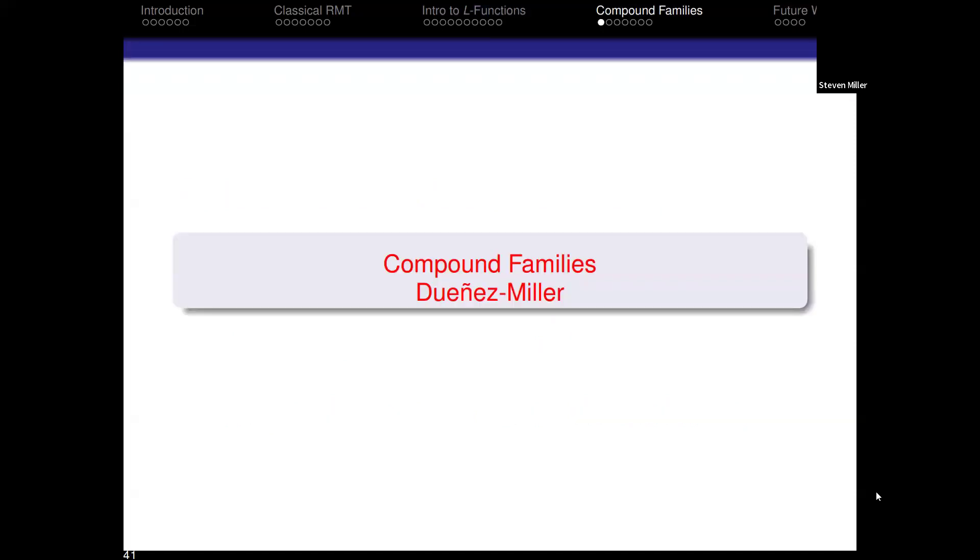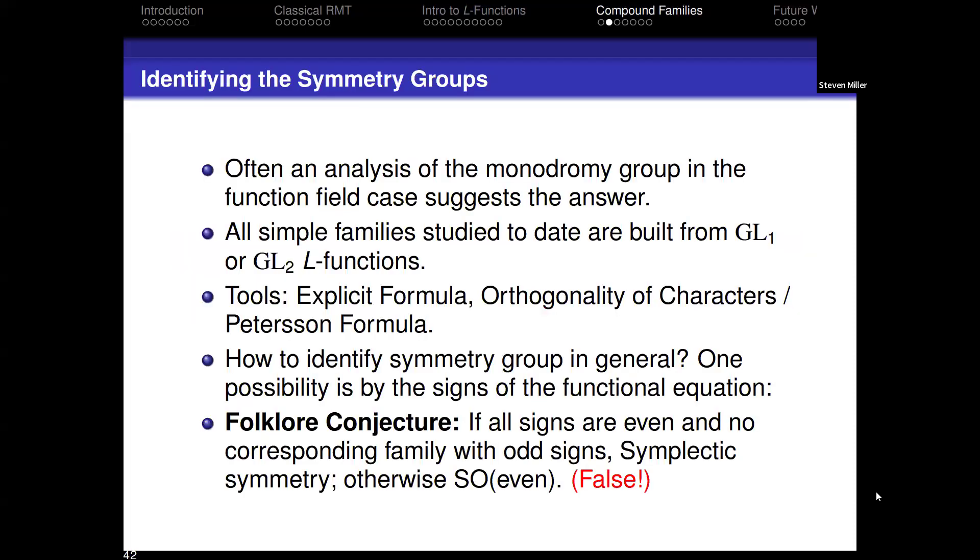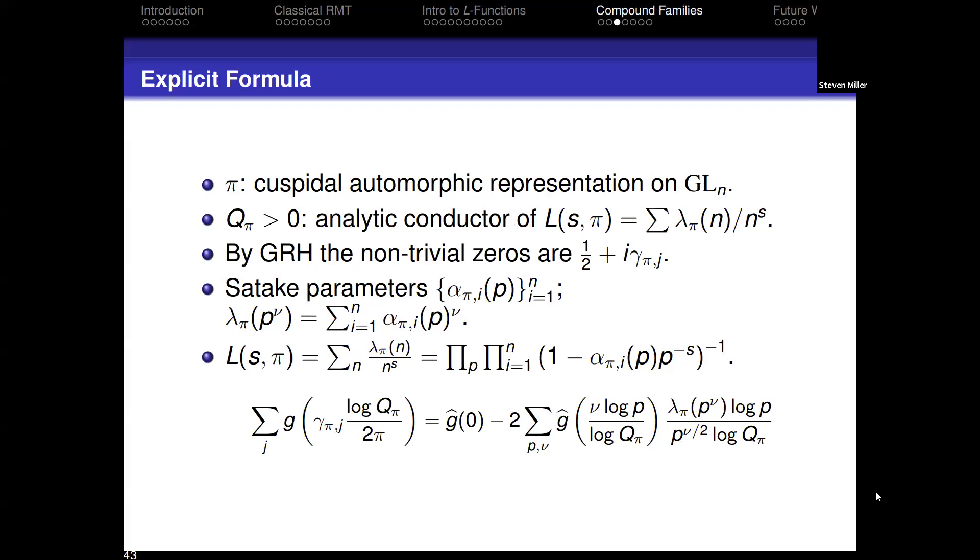What I want to briefly mention now is compound families. If I have a family of L-functions, how do I determine what is the symmetry of a family of L-functions? And if I have two families of L-functions and combine them, what's the symmetry of the combined family? This slide is basically just the technical preliminaries. I'm looking at standard families of L-functions. What really matters is given any L-function, I can write the sum of λ over n^s. The λs are associated with what's called the Satake parameters. λ at p^ν is the sum of the νth powers of the Satake parameters. It's basically the νth moment of these parameters. If I understand these parameters, I understand my coefficients. I have an explicit formula which relates sums over zeros to sums over primes.